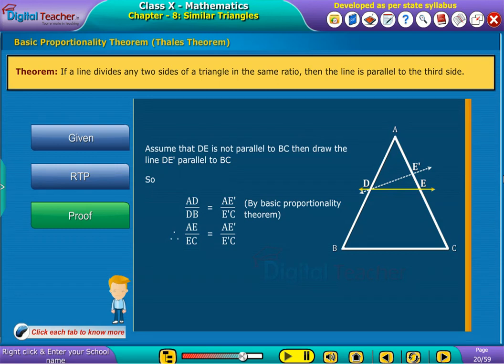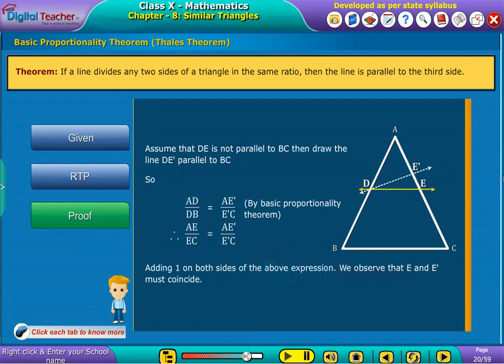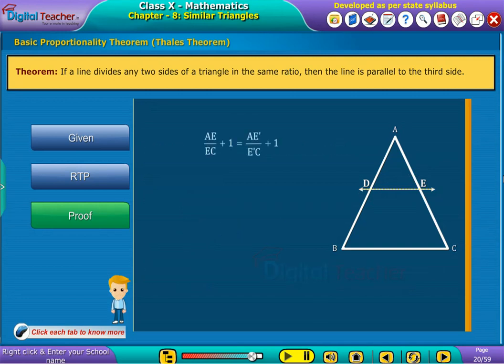we obtain as shown. Add one on both sides of the expression. We observe that E and E' must coincide. By further solving, we get E'C equal to E'C.